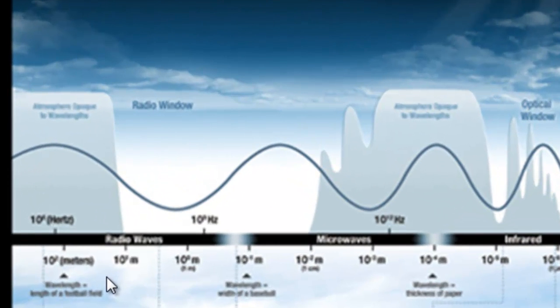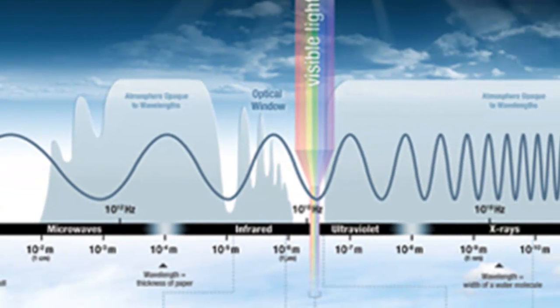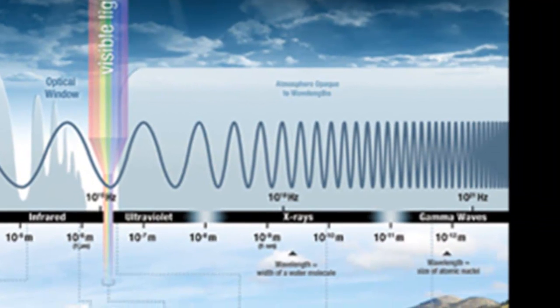There are low frequency, long wavelength radio waves, to the mid frequency visible light, to the highest frequency, very short wavelength, very high energy X-ray and gamma rays. These two are blocked completely by the thermosphere.